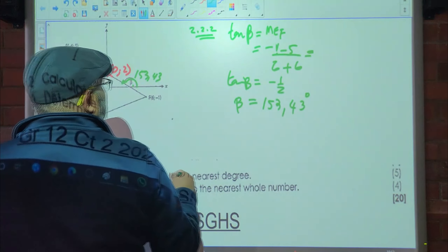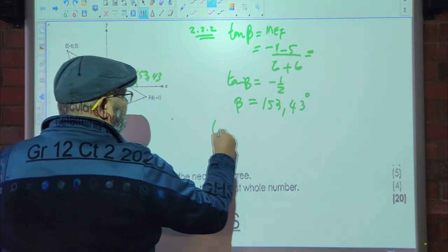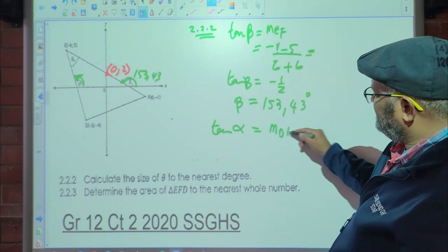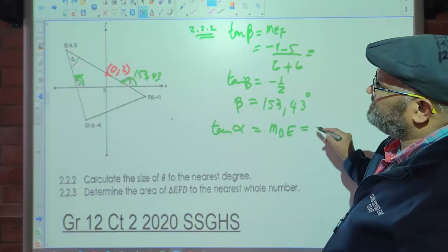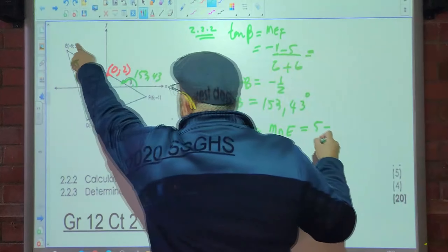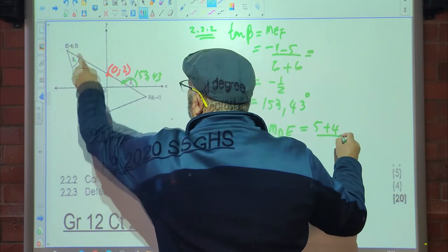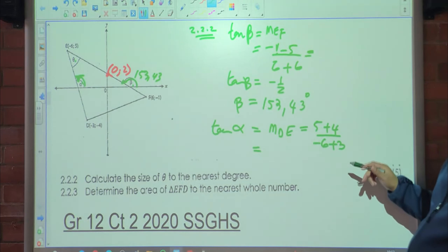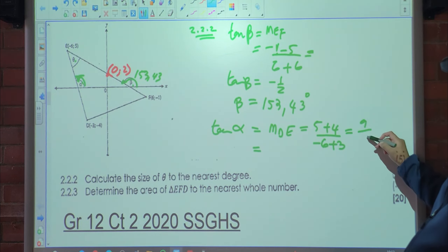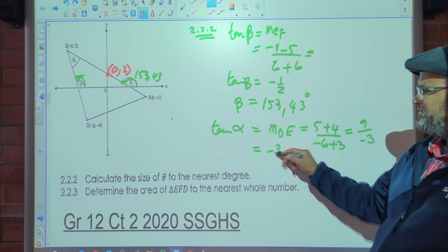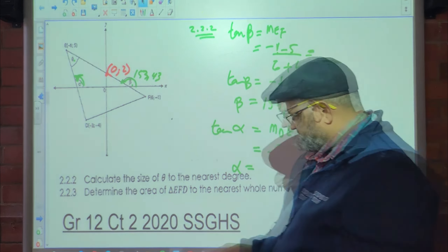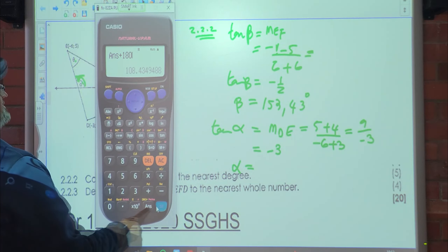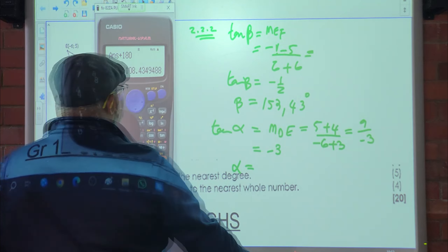Now for alpha: tan(α) = gradient of DE = (5 − (−4)) / (−6 − (−3)) = 9 / (−3) = −3. So alpha = arctan(−3), giving a reference angle of about 71.57°, and the obtuse angle of 108.43 degrees.